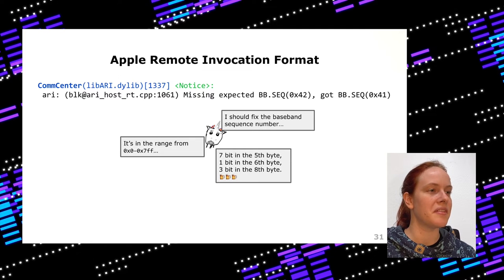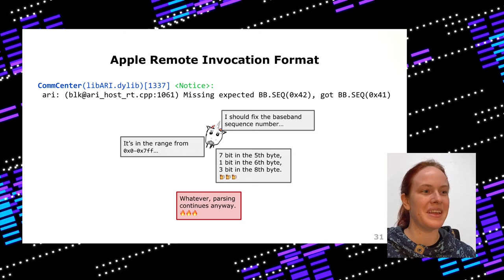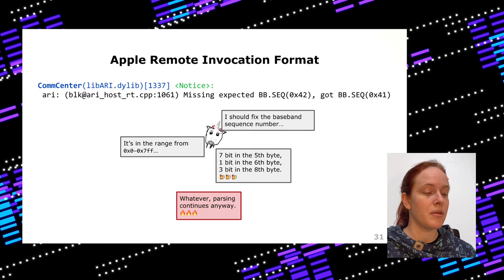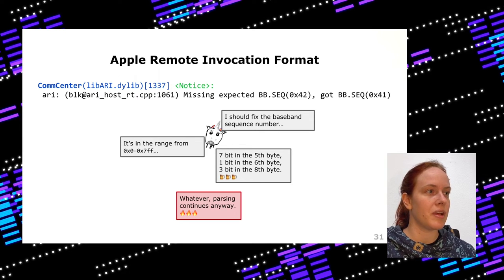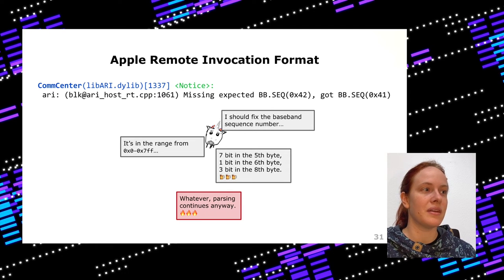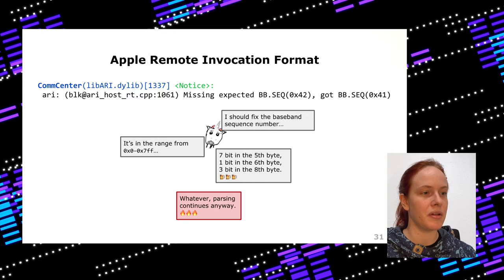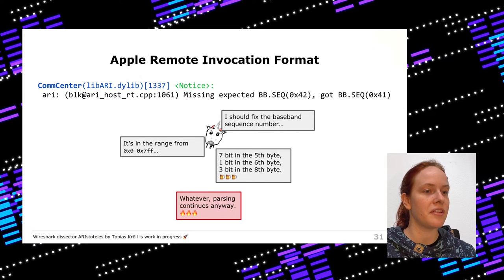I wrote the code to fix the sequence number, but during replay of packets I noticed it doesn't even matter — no matter if your sequence number is valid or invalid, parsing continues. Even packets with a wrong sequence number are parsed, probably because otherwise there would be too many issues given the buggy protocol implementation. If you send the first four magic bytes wrong or a wrong length, the packet is potentially ignored, but parsing continues and Comcenter is not terminated like in QMI. Since it's a proprietary protocol there's currently no tooling available, but Tobias is working on a Wireshark dissector that will be publicly released after his thesis.